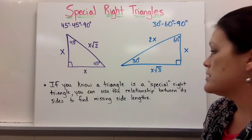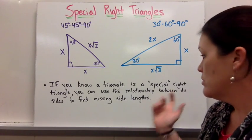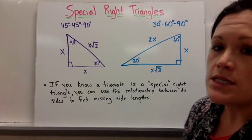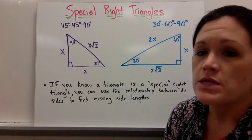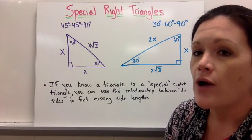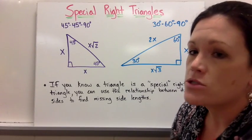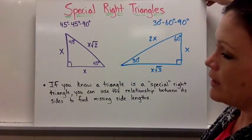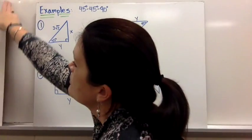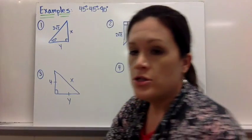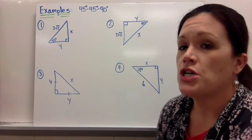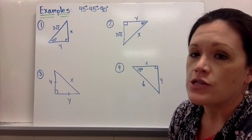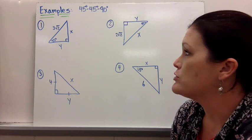If you know a triangle is a special right triangle, you can use these side relationships to figure out missing sides. Let's look at some examples of both types, starting with the 45-45-90.